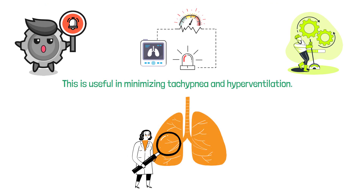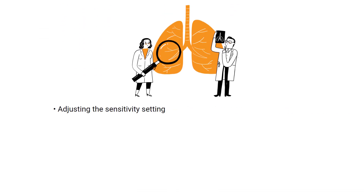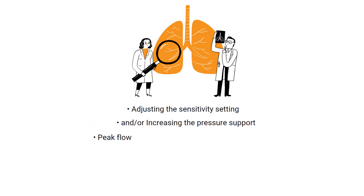When respiratory distress is the cause, it should be identified and corrected as soon as possible. Some potential ways to correct it include adjusting the sensitivity setting and/or increasing the pressure support, peak flow, or FiO2.